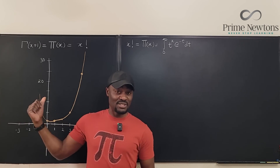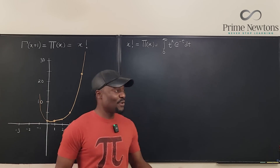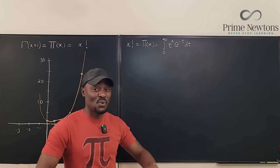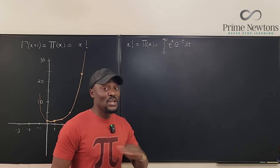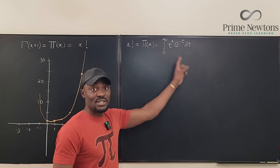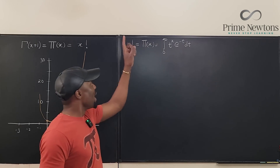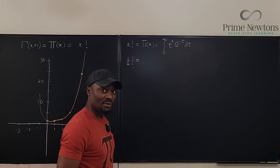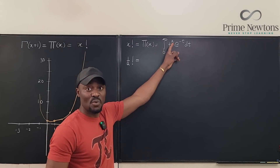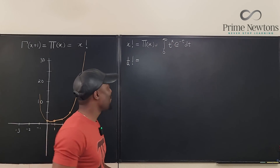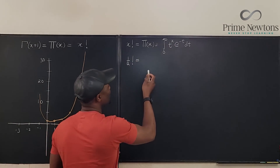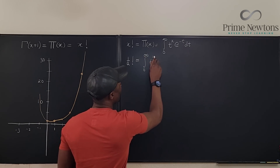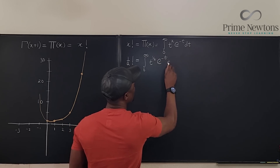Now that we have a continuous function, we don't need to worry about whether the exponent is n, z, x, or t — it doesn't matter. If we try to compute one-half factorial, it is not impossible. We just replace x in the integral with one-half. So one-half factorial equals the integral from zero to infinity of t to the one-half times e to the negative t, dt.